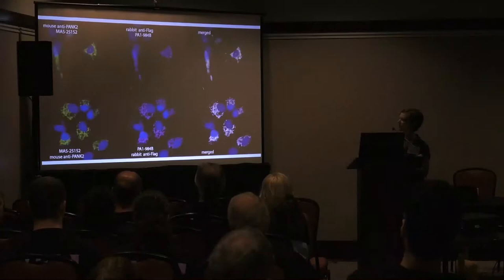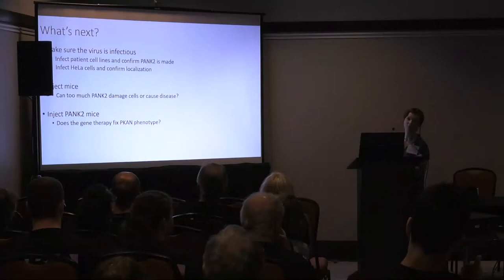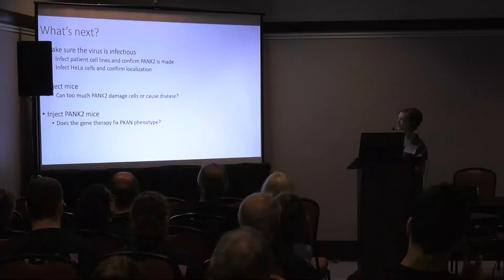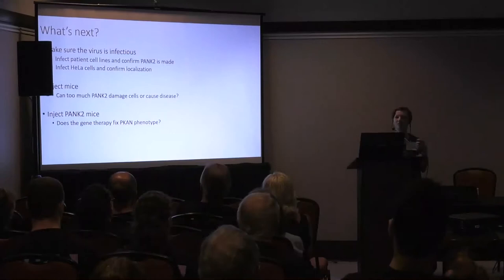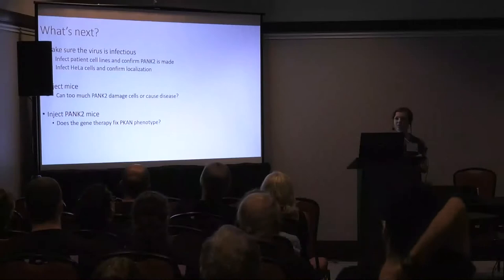So what's next? We're going to make sure the virus is infectious. I'll use it to infect patient cell lines — thank you to everyone who's donated cells for science. We'll make sure PANK2 is being made and confirm localization. Then we'll inject wild-type mice with the virus to make sure there's no negative phenotype, because we don't know if overexpressing PANK2 could cause problems. After confirming it doesn't hurt mice, we can then inject PECAN mice and see if that fixes the phenotype.